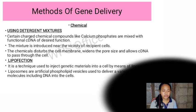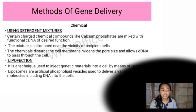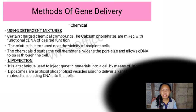Chemical methods of gene delivery include the use of detergent mixtures. Certain charged chemical compounds like calcium phosphates are mixed with functional DNA of the desired function. The mixture is introduced near the vicinity of recipient cells. The chemical disturbs the cell membrane, widens the pore size, and allows cDNA to pass through the cell. Another chemical method is lipofection — a technique used to inject genetic material into a cell by means of liposomes, which are artificial phospholipid vesicles used to deliver a variety of molecules including DNA into cells.